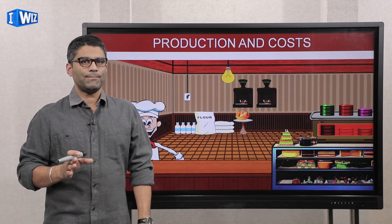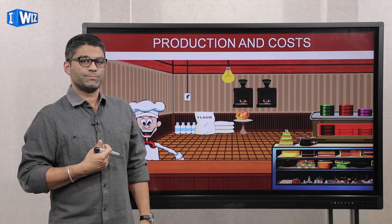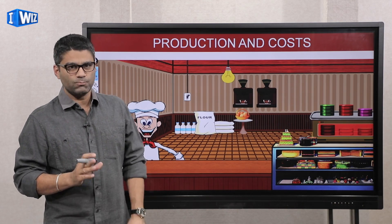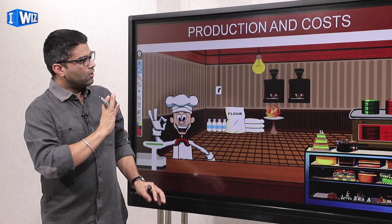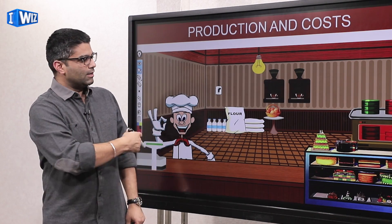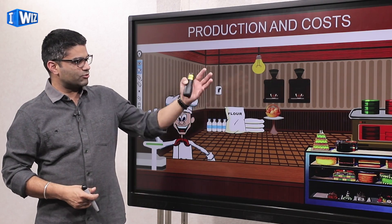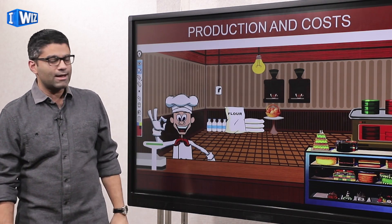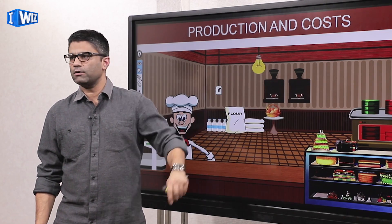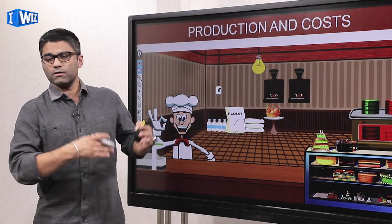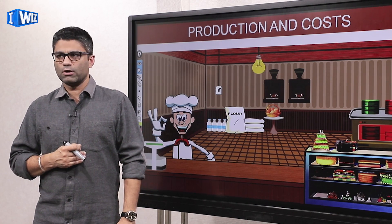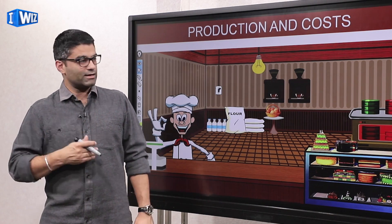Keep that example in mind because this chapter on producers and costs can get a little bit technical and sometimes boring. So always keep the bakery example in mind. The costs we talked about were the cost of electricity, the cost of inputs like flour and eggs, the cost of hiring an extra worker, and the cost of buying a coffee machine or a baking machine. All of these are costs. Today and in the next few videos we'll continue talking about costs.